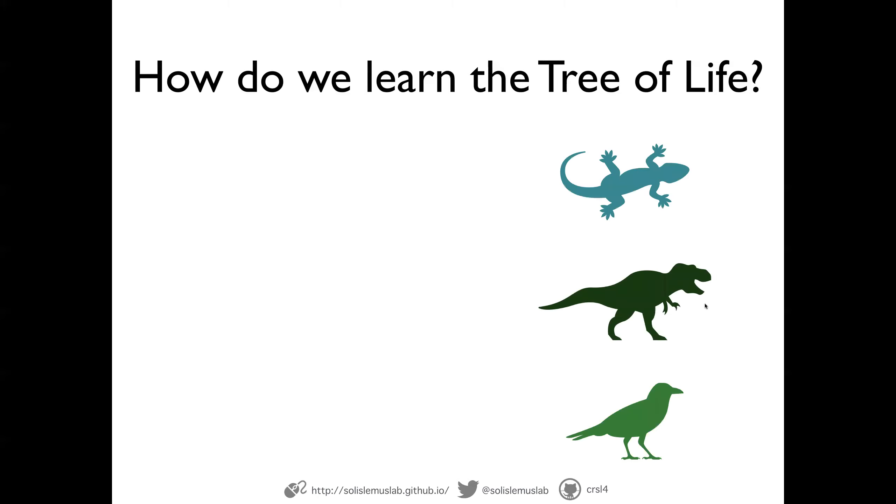And to illustrate this example, let's pretend that we have three species for which we want to know what is the tree that represents the evolutionary relationship between these three species. Normally, we would only use living species or species that are still present today. For illustration purposes, I'm putting here the dinosaur as well.